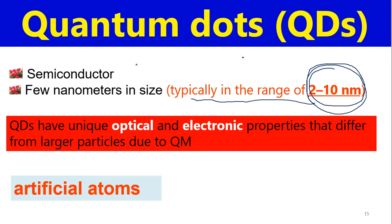Two properties change a lot: the first is optical properties, and the second is electronic properties. When the size of your material is 2 to 10 nanometers, quantum phenomena occur there — quantum entanglement and quantum confinement — and due to these phenomena, some extraordinary behaviors occur in a material. Quantum dots have two specialties: optical properties and electronic properties. They are also called artificial atoms.